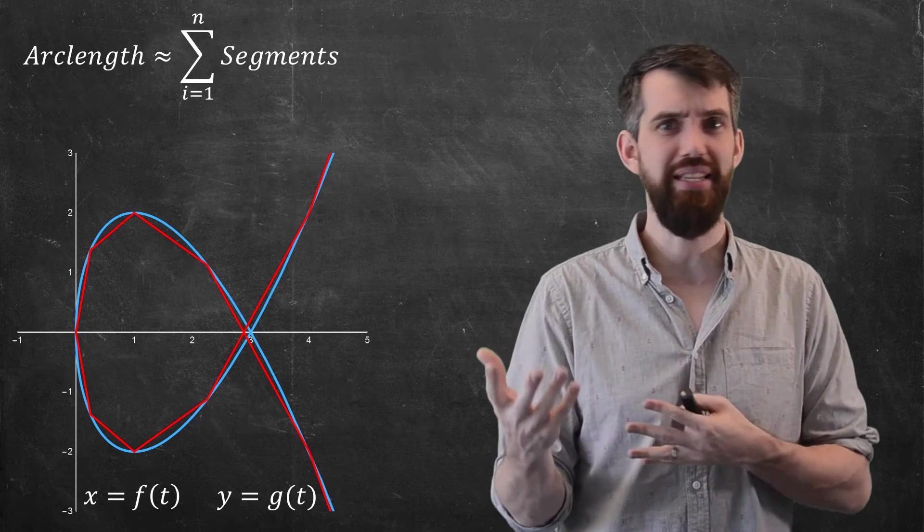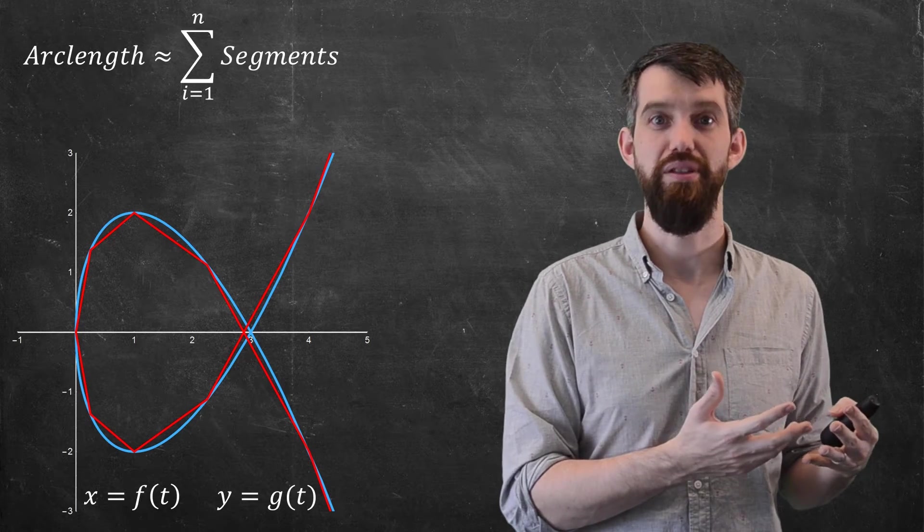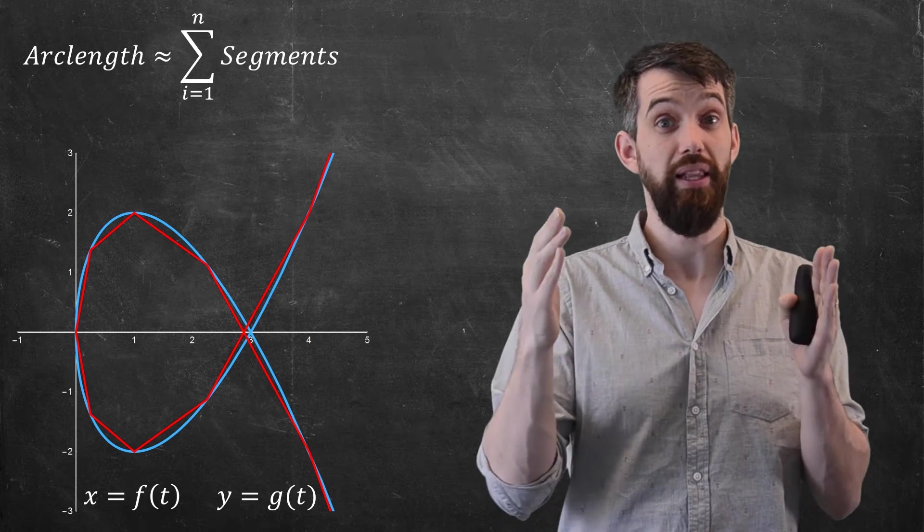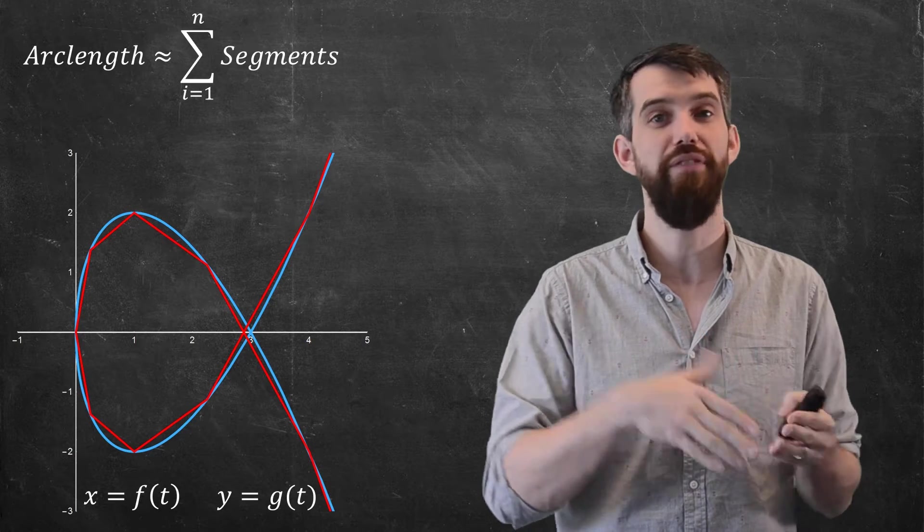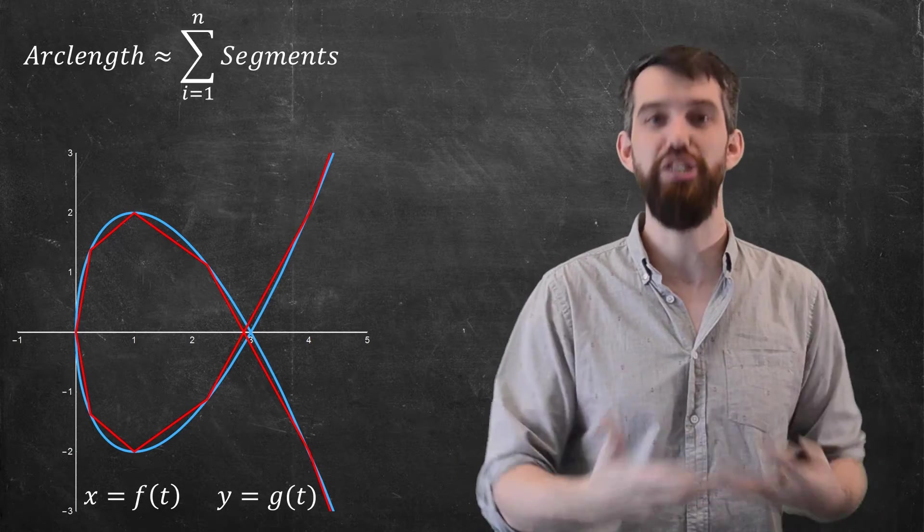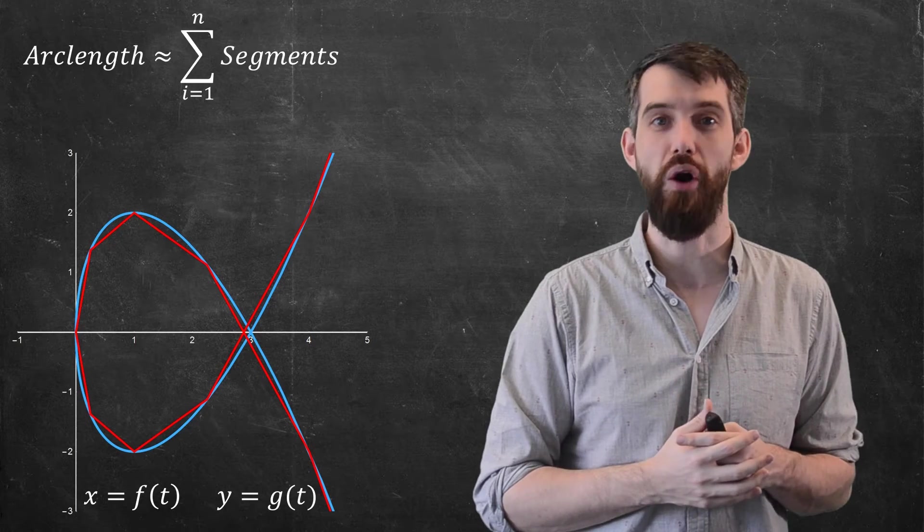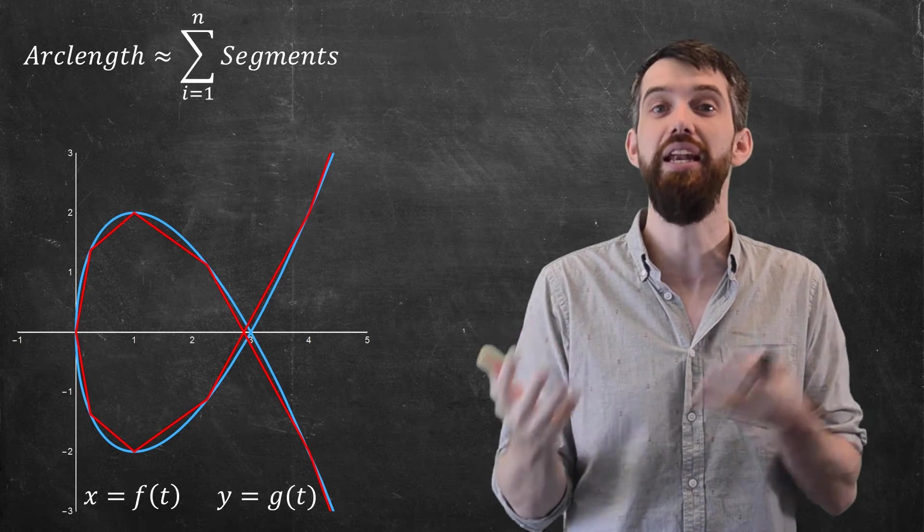Then I'm going to take the limit as n goes to infinity. So the number of segments gets very large, but the length of any individual segment gets smaller and smaller. And then if I do that, I'll replace my summation with an integral, and that's how we did arc length in the past. So let's do that again here.